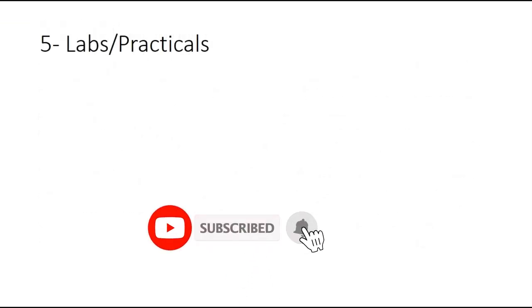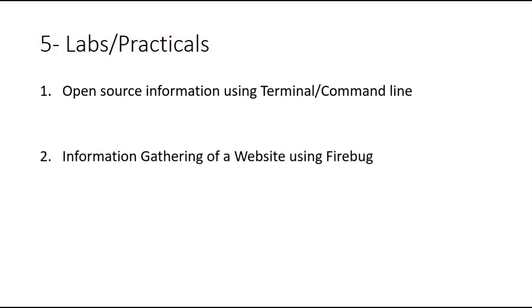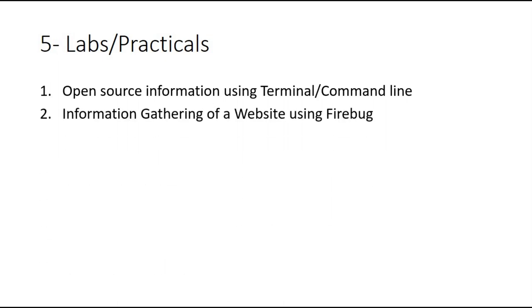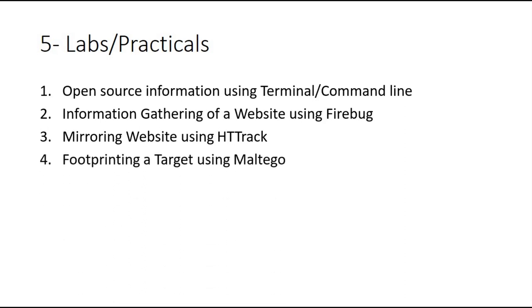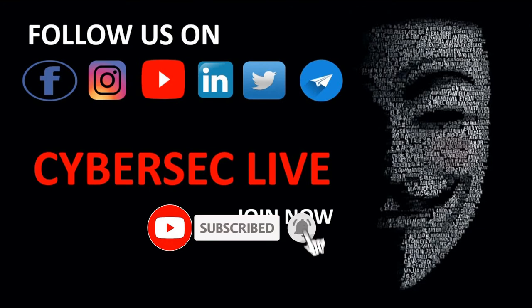The 5 lab practicals we are going to show are: (1) Open source information gathering using terminal on Kali Linux; (2) Information gathering of a website using Firebug or by viewing source code; (3) Mirroring a website using HTTrack; (4) Footprinting a target using Maltego — one of the strongest footprinting tools; (5) Information gathering using theHarvester. These 5 labs will be shown in the next 5 videos, so stay tuned. If you like the video, please subscribe to the channel and support us. Thanks a lot, bye bye, take care.